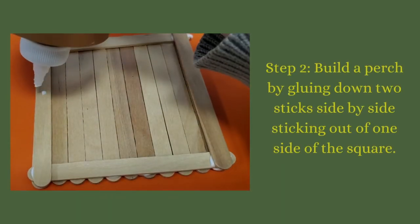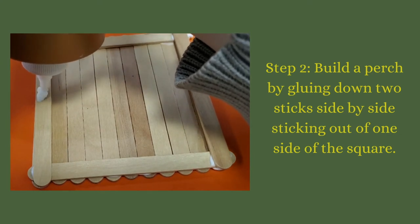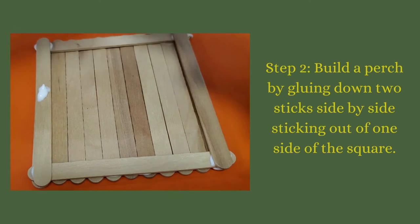Next you'll build a perch for the bird by gluing down two sticks side by side sticking out of one side of the square just like this.